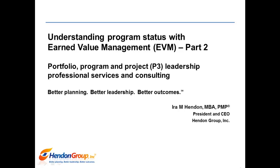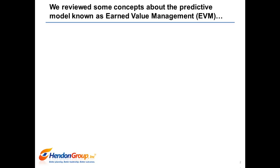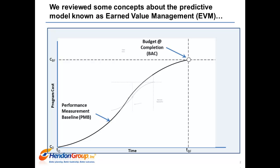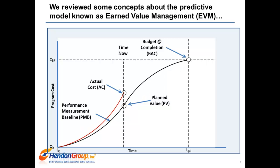Welcome to Part 2 of Understanding Program Status Using Earned Value Management. In Part 1, we reviewed some concepts about the predictive model known as earned value management. We introduced the concept of planned value — the authorized budget assigned to the work, noted as the PV curve. We described the concept of actual cost — total cost actually incurred, noted as the AC curve — and the concept of earned value, the value of the work performed, noted as the EV curve.